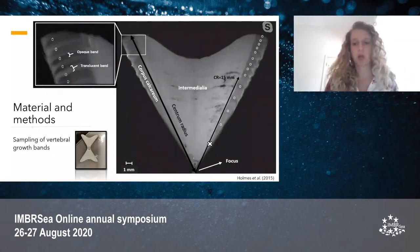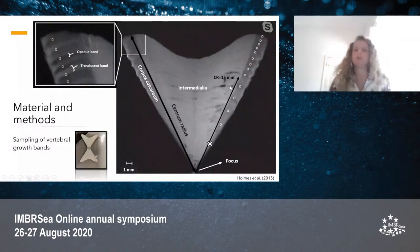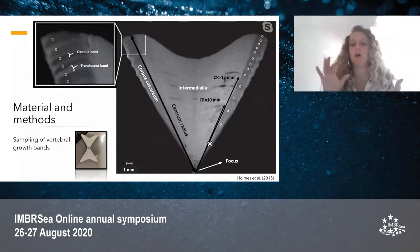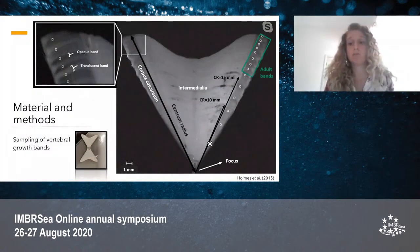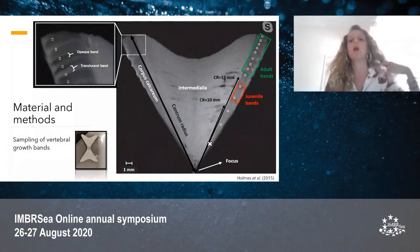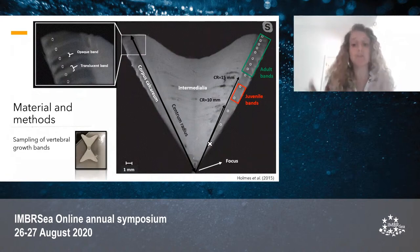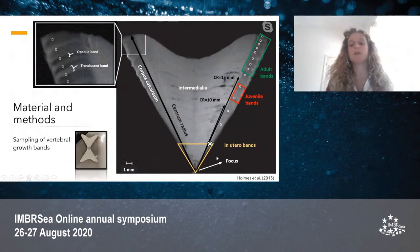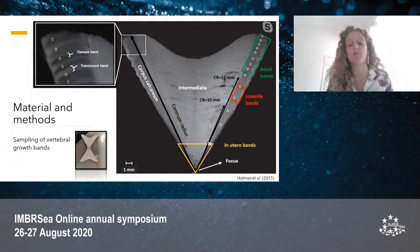The X on the figure indicates the birth band, which indicates when the shark was born. After the birth band, there is a periodical deposition of vertebral bands with an alternation between opaque and translucent bands. We found a strong relationship between vertebrae size and shark size. A centrum radius of 15 millimeters corresponds to adult size, and a centrum radius between 10 and 15 millimeters corresponds to juvenile size. We sampled all vertebral bands above 15 millimeters as adult bands and all bands between 10 and 15 millimeters as juvenile bands.